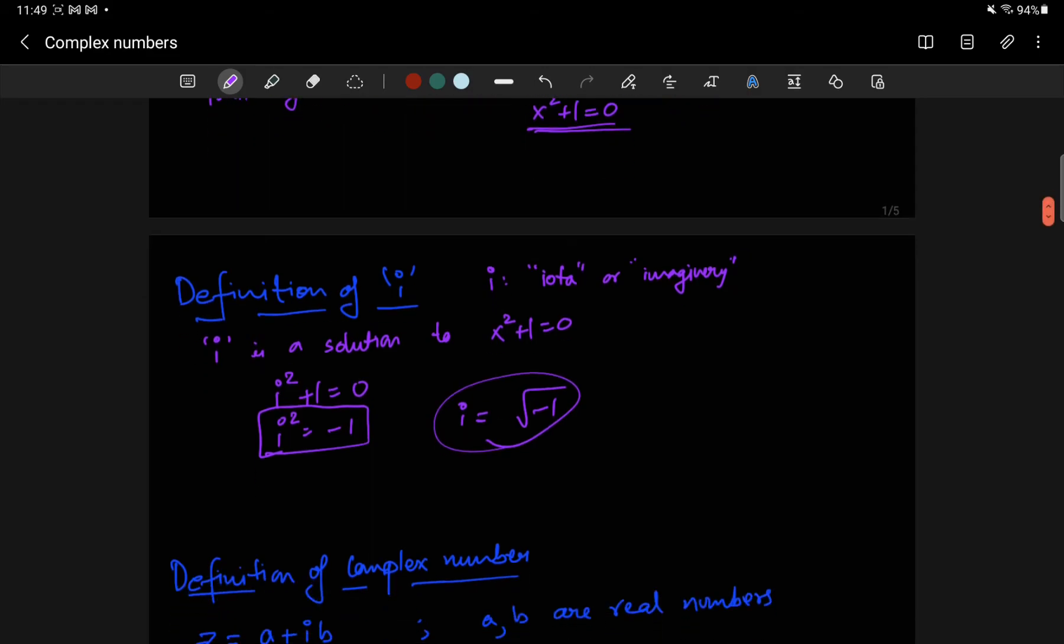And it turns out that once you do this, you have defined all negative square roots. How come? Let's see. Because square root of negative 4 can be written as square root of negative 1 times square root of 4. But this, by our definition, is i, and this is 2.